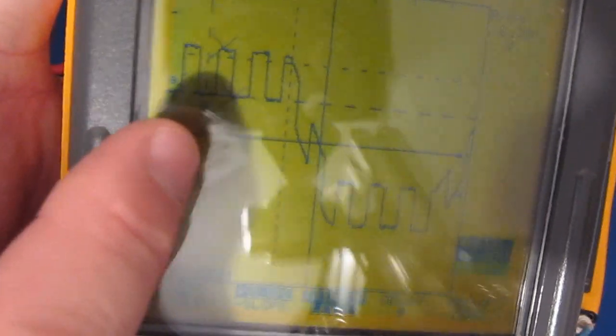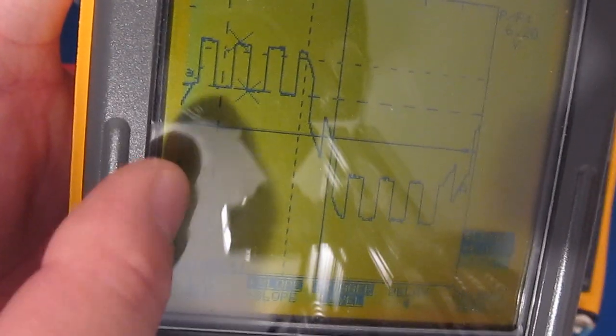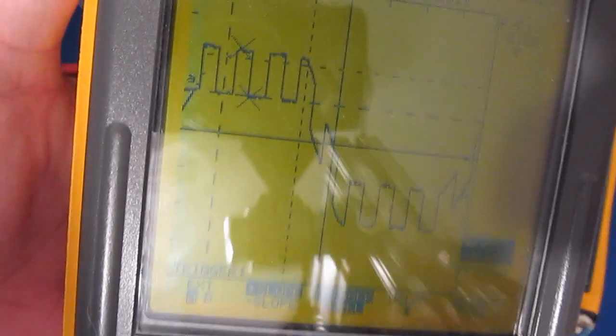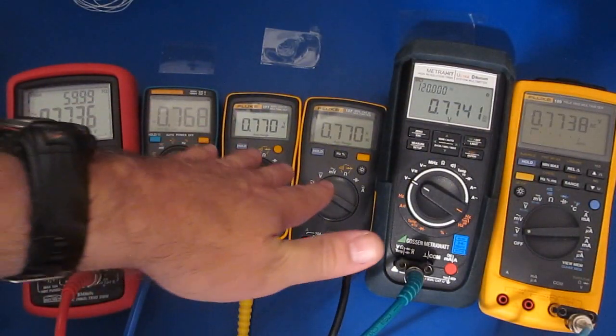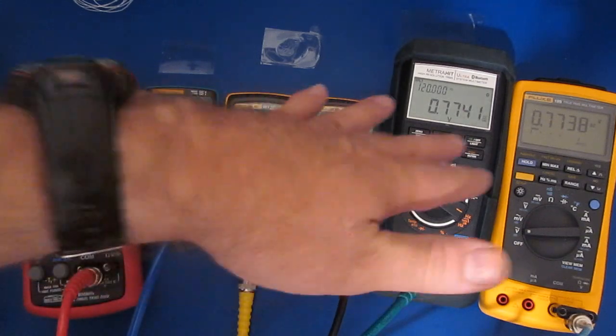This is now a clipped sine wave and I'm still modulating it with a square wave, and again that's 50% modulation. It looks like our averaging meters here are fairly close to the RMS meters again.